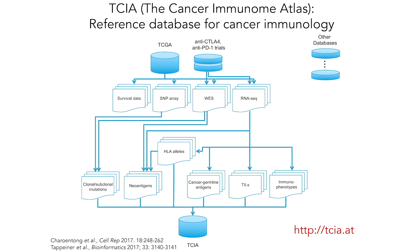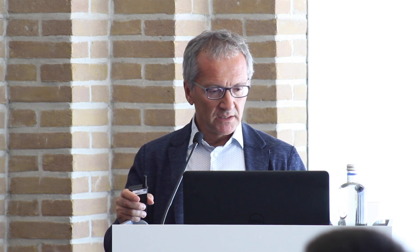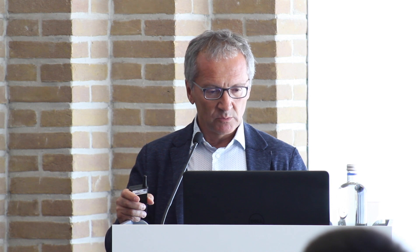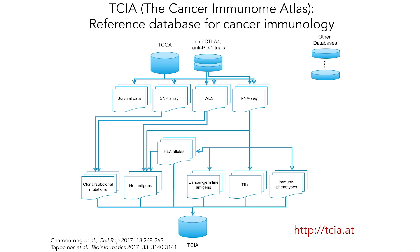Since this is a very challenging job requiring a lot of analytical pipelines, we did all the calculations from the TCGA data for around 9,000 samples. We took all exome sequencing, RNA sequencing data, survival data, SNP arrays, and calculated the clonal and subclonal mutations, the neo-antigens, the cancer germline antigens, the TILs, and the immunophenotypes. Everything is available on a database we call the Cancer Immunome Atlas, or TCA.at.